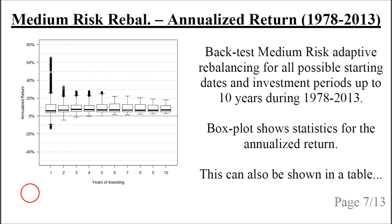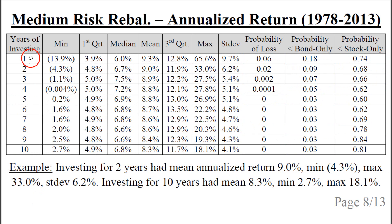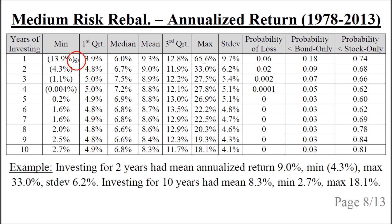If we want to see more details, we can look at the statistics in table form. The table shows years of investing, minimum annualized return, first quartile, median, mean, third quartile, maximum, and standard deviation. For one year of investing, the minimum annualized return was minus 13.9%, the average was 9.3%, and the maximum was 65.6%. Note that the median is quite a bit lower than the mean.